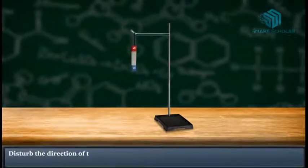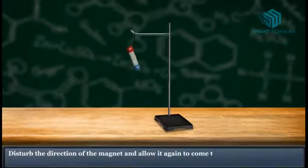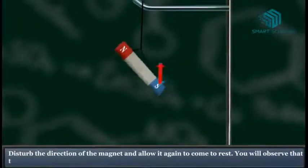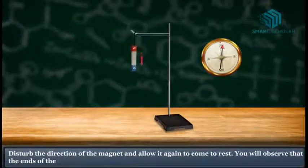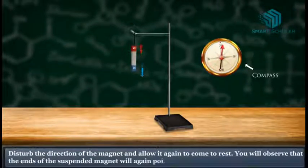Disturb the direction of the magnet and allow it again to come to rest. You will observe that the ends of the suspended magnet will again point in the north-south direction.